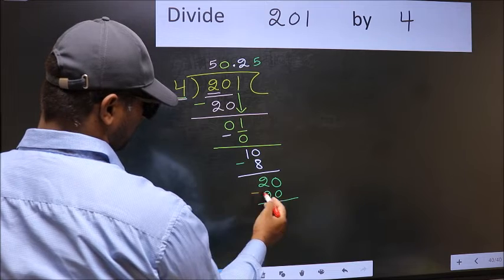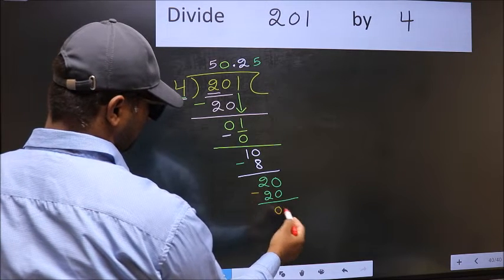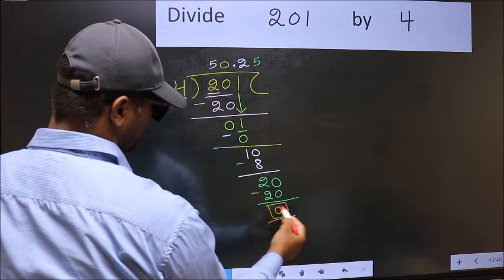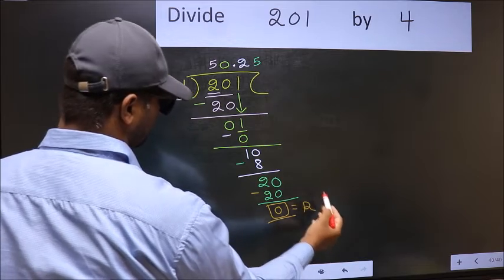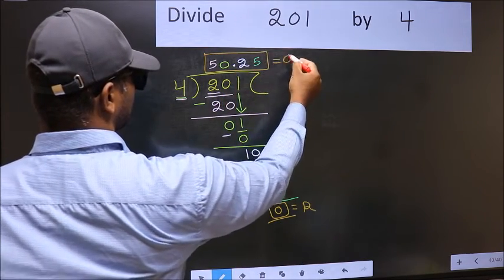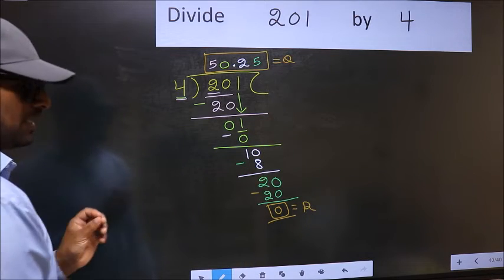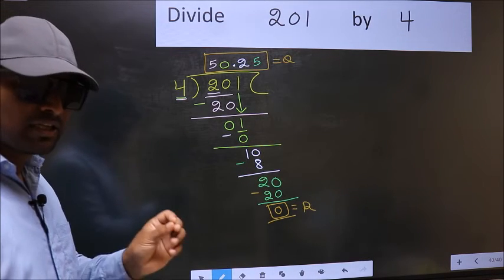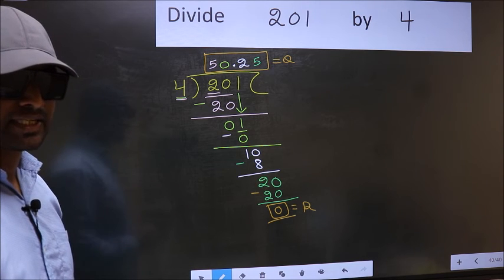Now you should subtract 20 minus 20, 0. This is our remainder and this is our quotient. Did you understand where the mistake happens? You should not do that mistake.